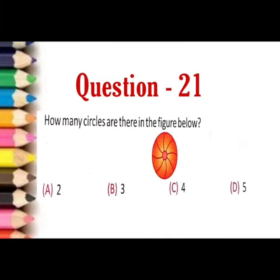Now, let's see question 21. How many circles are there in the figure given below? Let's count the total number of circles. 1, 2. There are 2 circles in this figure. So, the correct answer of question 21 is option A, 2.